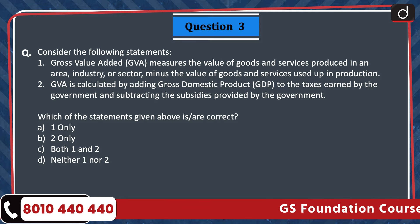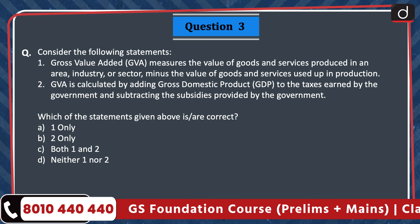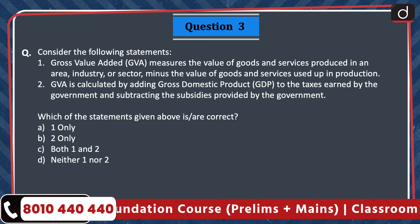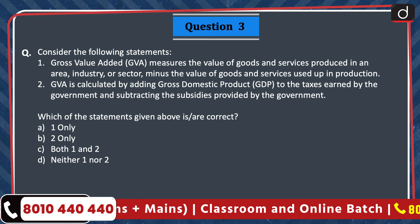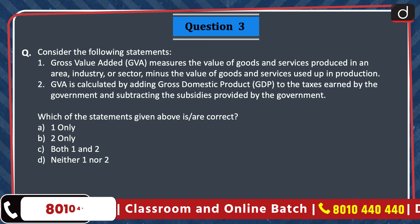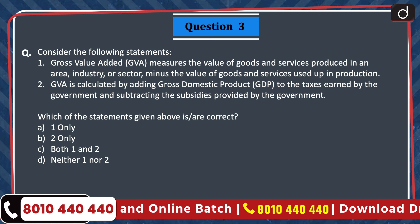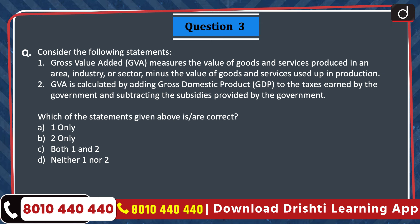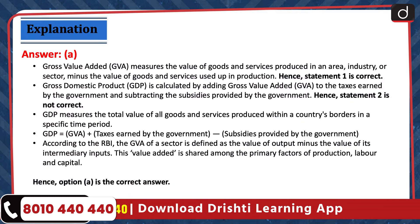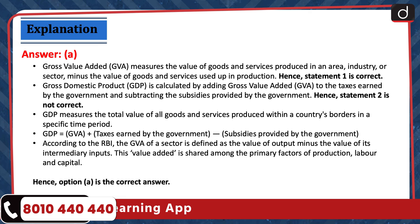Next question. Consider the following statements. 1. Gross value added measures the value of goods and services produced in an area, industry, or sector, minus the value of goods and services used up in production. 2. GVA is calculated by adding gross domestic product to the taxes earned by the government and subtracting the subsidies provided by the government. Which of the statements is or are correct? The correct answer is option A, 1 only. Gross value added measures the value of goods and services produced in an area, industry, or sector, minus the value of goods and services used up in production. Hence, statement 1 is correct.